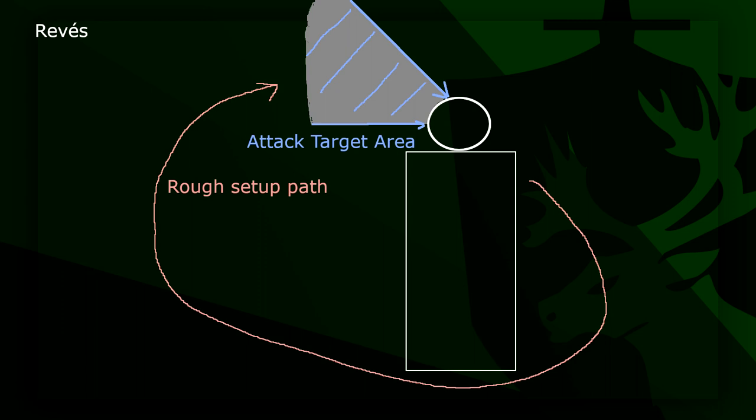Revés is a cut on the outside, started with a full moulinette circle. It is the mirrored version of Tajo. It is not uncommon that people find it awkward to do one side or the other of Revés and Tajo.